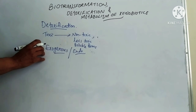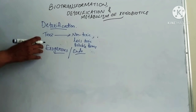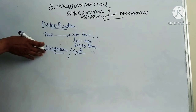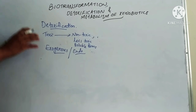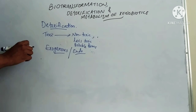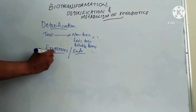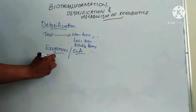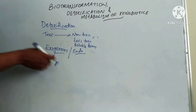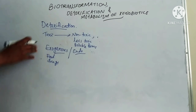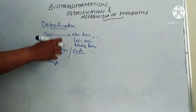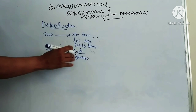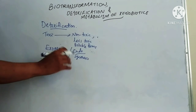Exogenous includes substances which are not produced or utilized by the organism. They may enter the body through food or in the form of certain medicines or drugs which are administered to the body. Endogenous means they may be produced in the body by synthesis or as metabolites of various processes in the body.